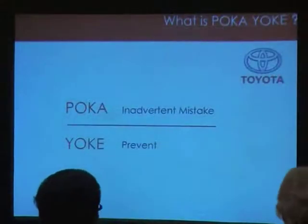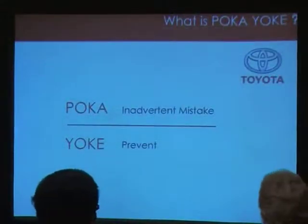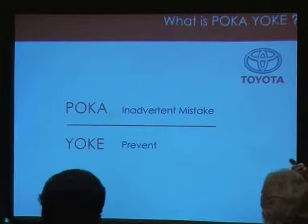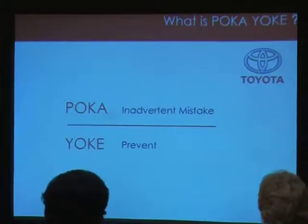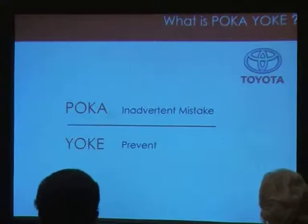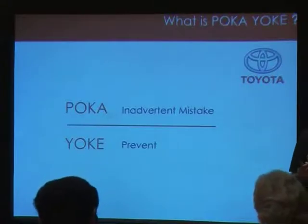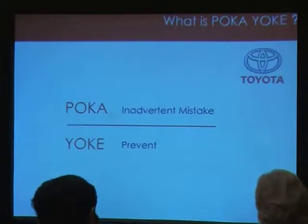When you are producing something, any work that you do, people work hard, they get exhausted, things happen, you have checklists, but you will still find that some mistakes will slip through. How can we create a process so that these mistakes do not happen again? It is okay to make mistakes once, but do not keep making the same mistakes again and again.